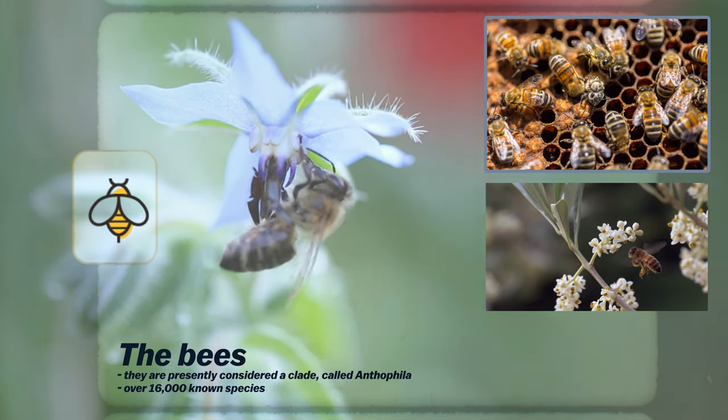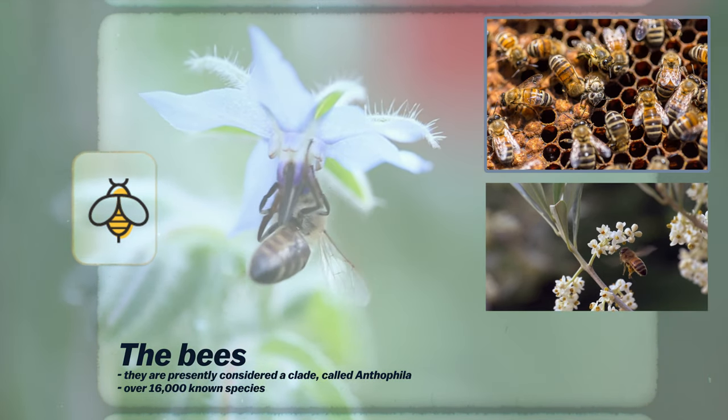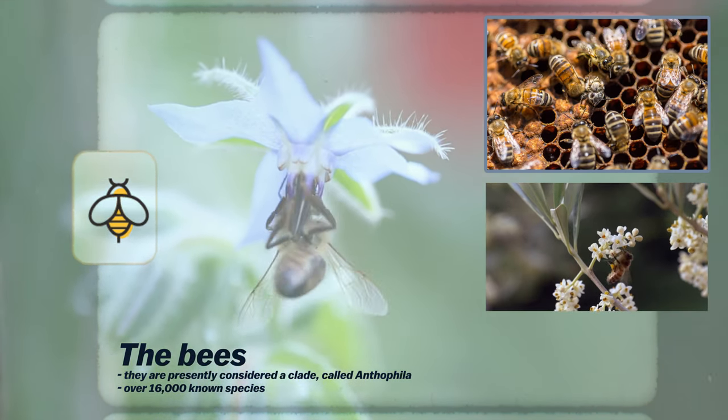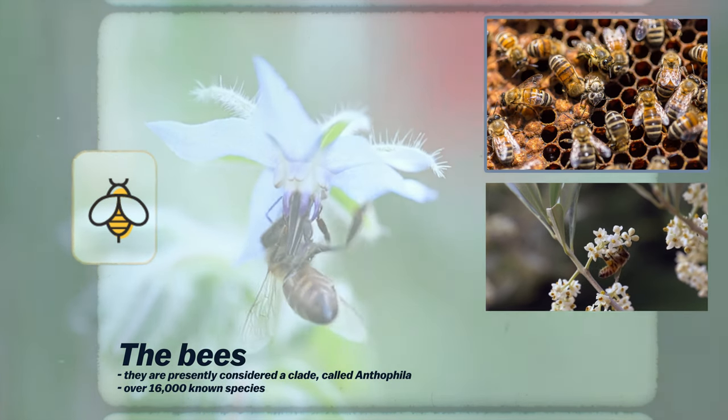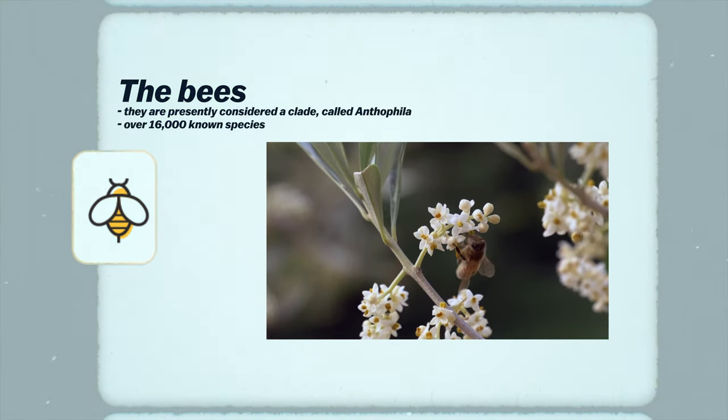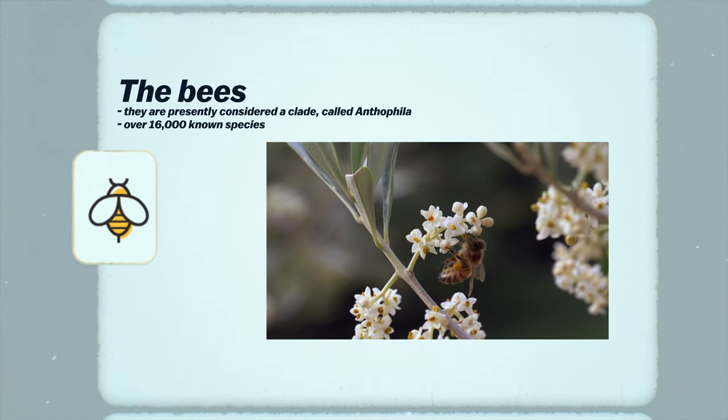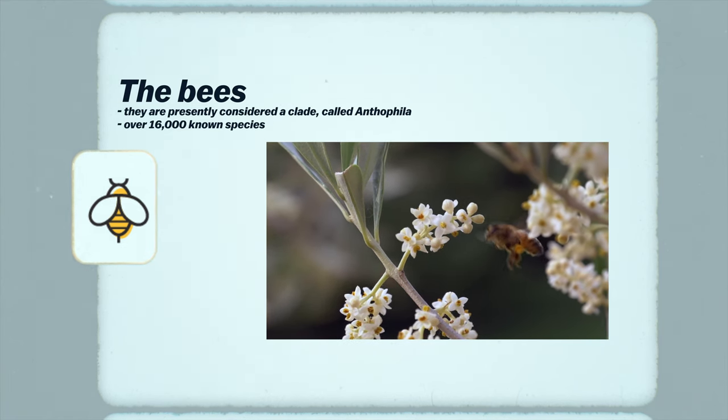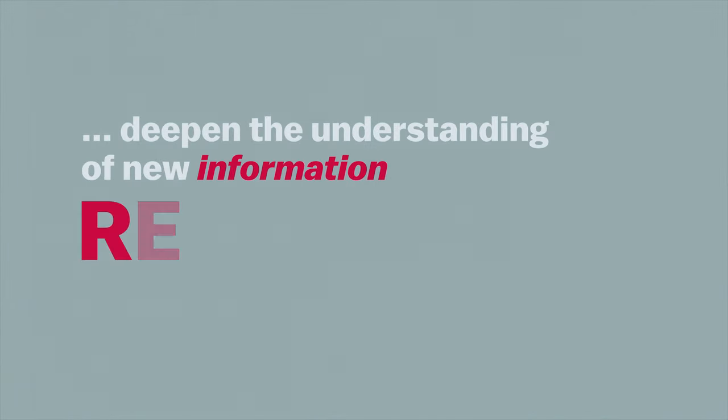Learning is more efficient when related verbal information is presented together with visual information. Therefore, adding visual elements to written text or spoken words can really help prevent our brains from becoming overloaded. Since another simple way to deepen the understanding of new information is with repetition,